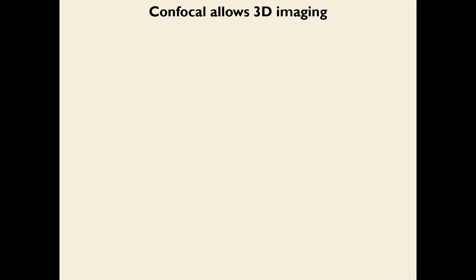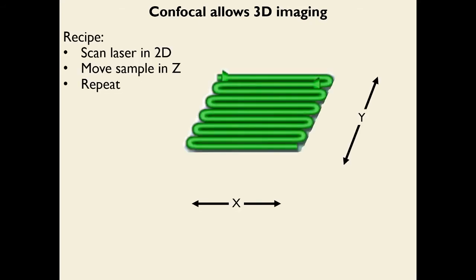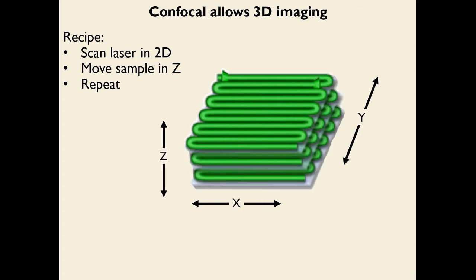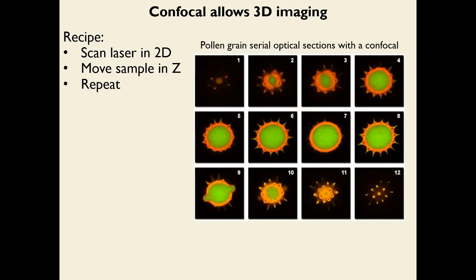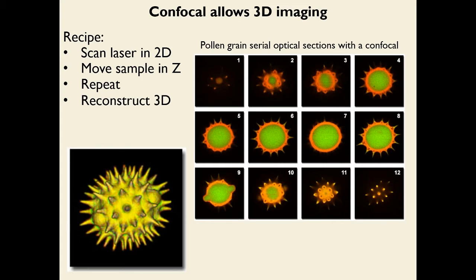Because confocal is an optical sectioning technique, each plane is independent and together they allow three-dimensional reconstruction. Serial optical sections of a pollen grain acquired with a confocal look very different in different planes, but when reconstructed in 3D they reveal the full structure of the pollen grain in all its three-dimensional detail.